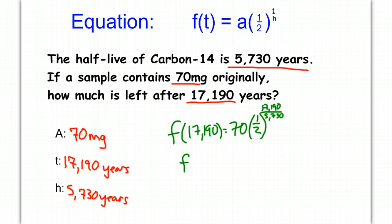Now again, if we put this into a calculator, we get that f(t), where t is 17,190, is going to equal 8.75.